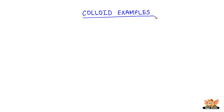This video is about the different examples of colloids. We have seen that colloids have two components: a dispersed phase and a dispersion medium.